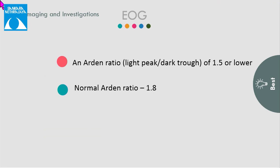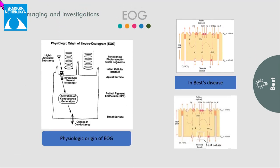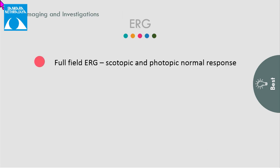On EOG, the Arden's ratio is generally found to be less than 1.5. The probable mechanism is that when normal light falls, it causes an increase in the light-activated substance which binds to the apical membrane of the RPE, activating a second messenger — probably calcium — causing increased conductance of the chloride channel and depolarization resulting in a light peak. In Best disease, this chloride channel is blocked. On ERG, the scotopic and photopic responses are generally normal.